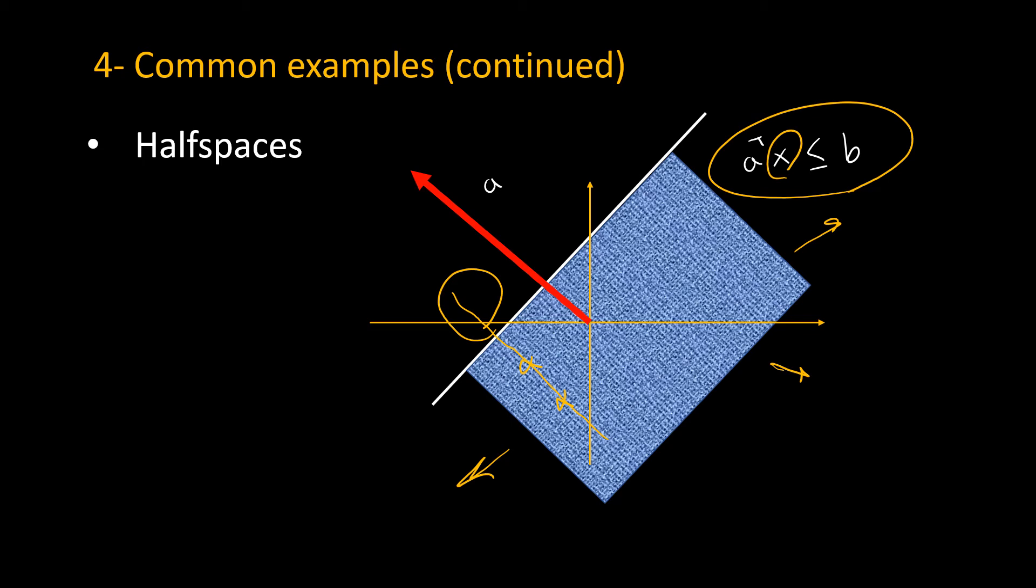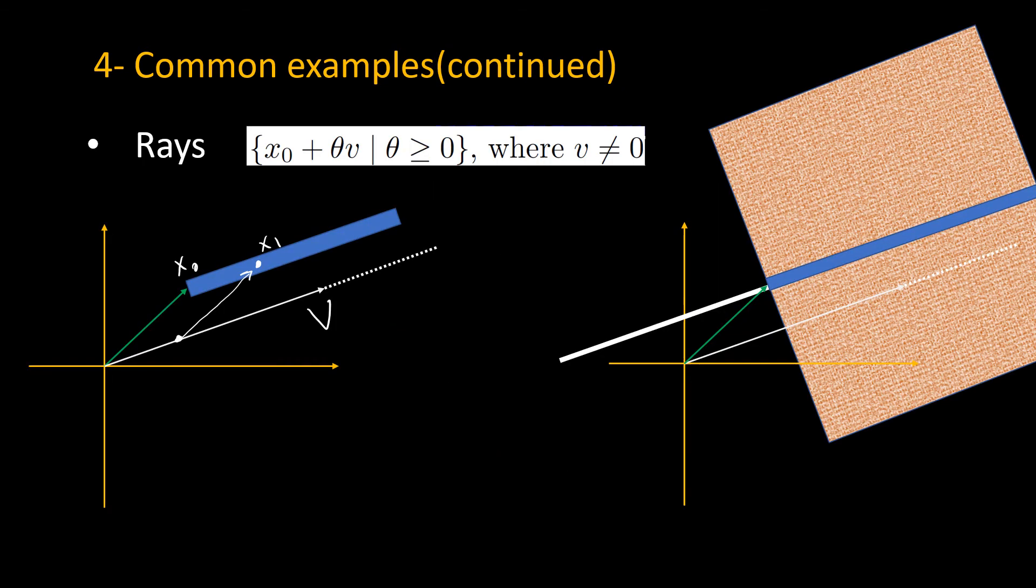Another set that is a polyhedron is a ray. In this picture, the blue line here is a ray. I have denoted it thicker for the sake of representation. To define a ray, we need a point x_0 and a direction v to get x_0 plus theta v, where theta is larger than zero. Here x_0 is the point and direction v is the dotted line. If you let theta be zero, you get x_0 here. If you let theta be one-fourth, you get this vector, and x_0 plus theta v would be x_1. Hence, by changing theta from zero to infinity, we get all points on the blue ray.